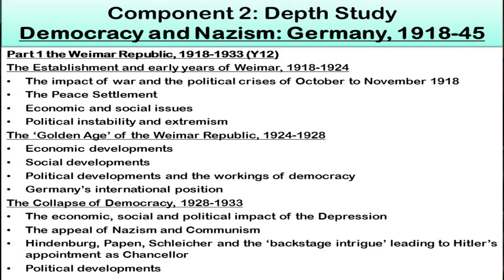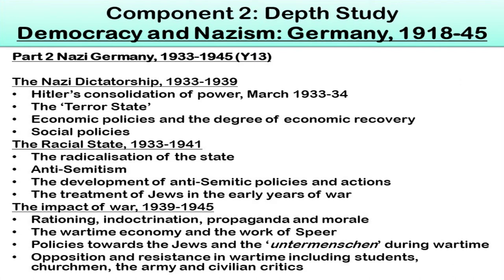The collapse of democracy covers the impact of the Depression, the rise of the Nazis and communists, and ultimately Hitler's appointment as chancellor in 1933. In Year 13 we focus on Nazi Germany in more detail: the establishment of the Nazi dictatorship, the terrorist state, economic policies, the racial state, anti-semitism, and the treatment of Jews in the early years. We then cover the impact of the Second World War up to 1945, including propaganda, indoctrination, opposition, and resistance.